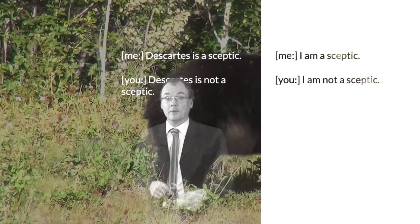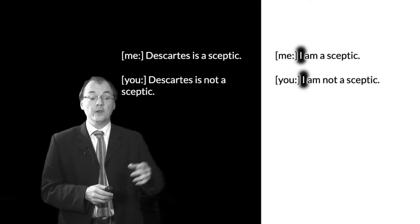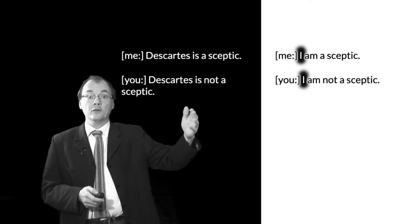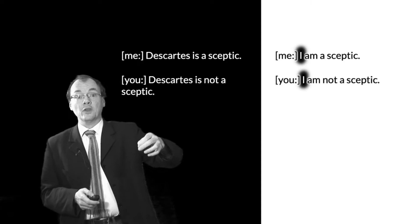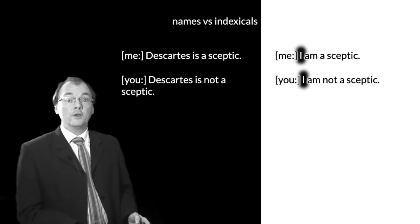So 'I' functions quite differently from the way that a proper name like 'Descartes' functions, because it seems that what 'I' picks out varies depending on the context of utterance. When you utter 'I am a skeptic,' the 'I' refers to you. When I utter the same sentence, my 'I' refers to me. Descartes doesn't work like that. So here we have a nice contrast between names and indexicals.